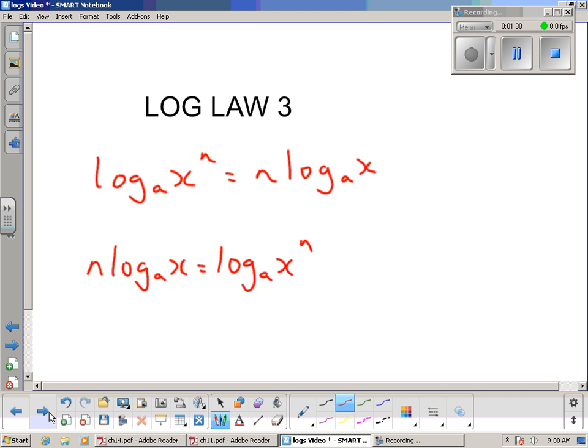Log Law 3 involves an indice. If you've got something to the power of n here, the log law suggests that we can take that power and put it down the front and become the multiplication. That n has become, instead of an indice, a front thing that's multiplying by the rest of the log.